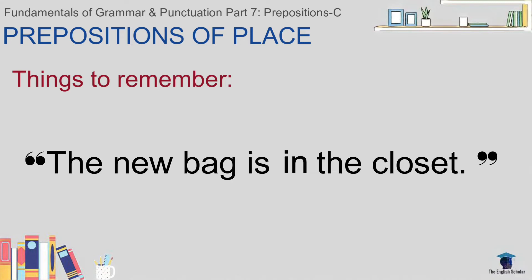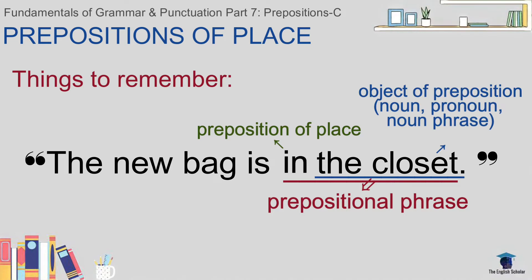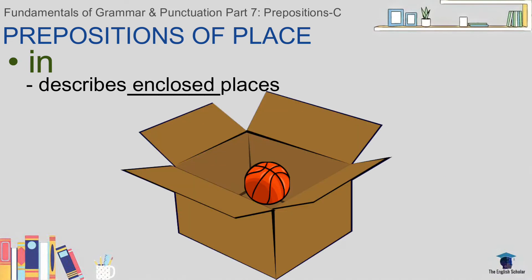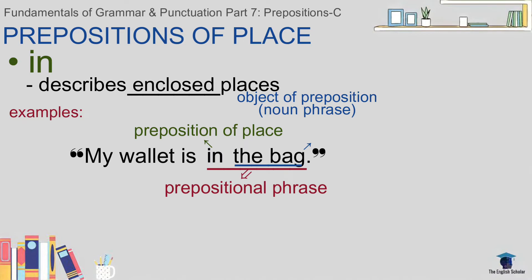Each preposition of place will have example sentences. The sentences will contain underlined phrases called prepositional phrases. The bolded words are the prepositions of place, and the nouns, pronouns, or noun phrases that come after them are the objects of those prepositions. Let's start with 'in.' 'In' describes enclosed places. For example: 'My wallet is in the bag.'